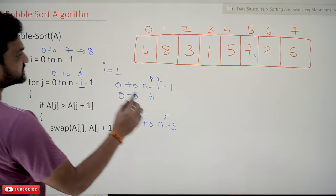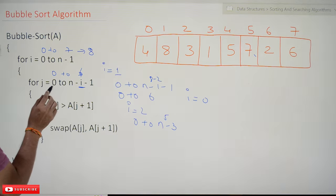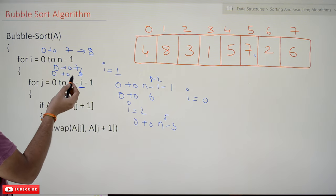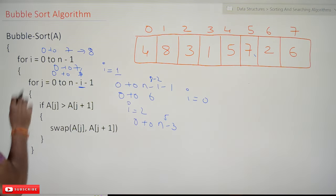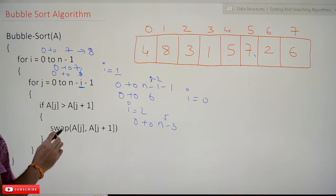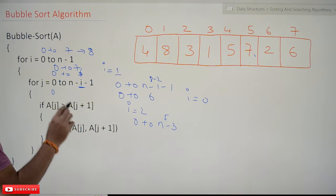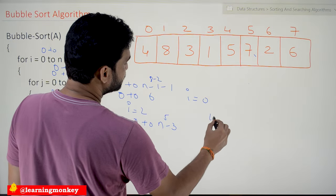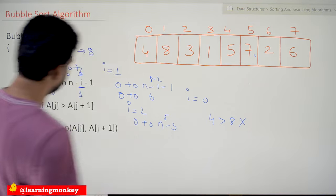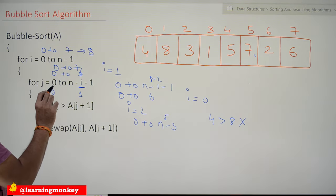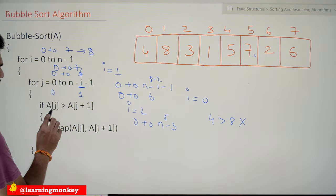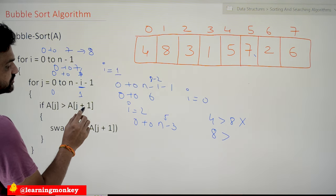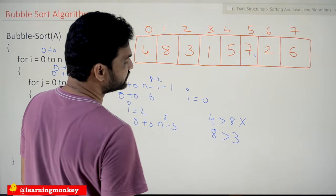When i equals 0, the j-loop iterates from 0 to 7. In the first comparison, j equals 0: a[0] is 4, a[1] is 8 — is 4 greater than 8? No, so we do not swap. When j equals 1: a[1] is 8, a[2] is 3 — is 8 greater than 3? Yes, so we swap. 3 and 8 get swapped.